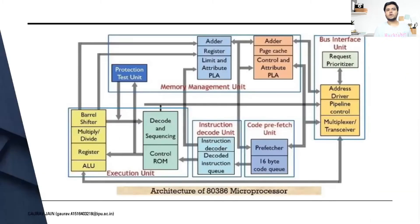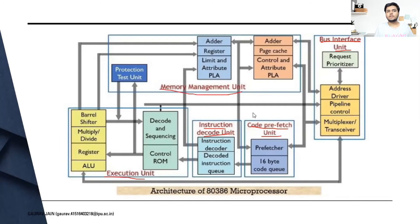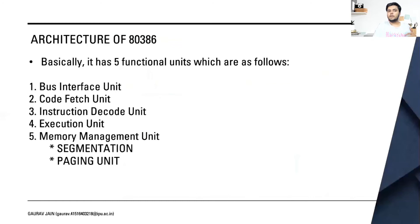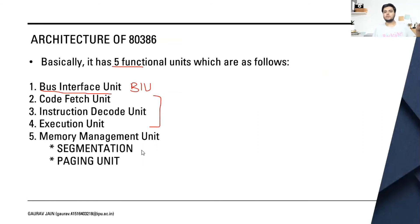What you can see on the screen right now is the architecture of the 80386 — how the chip works internally and what's inside it. There is a bus interface unit, then a code prefetch unit, an instruction decode unit, an execution unit, and finally a memory management unit. We'll be seeing these one by one, but first we'll look at how registers are organized in the 80386. There are five functional units: BIU (bus interface unit), code fetch unit, instruction decode unit, execution unit — which are part of the three-stage pipeline — and the memory management unit, which has two subparts: segmentation and paging.